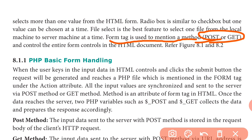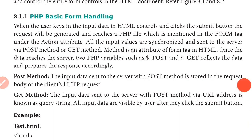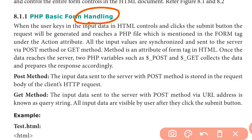Now we will look at PHP basic form handling. When the user keys in input data in HTML controls and clicks the submit button, a request is generated. This request reaches the PHP file which is maintained in the form tag under the action attribute. The form tag may contain text boxes, radio buttons, and other user elements.